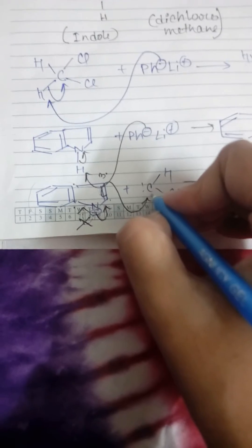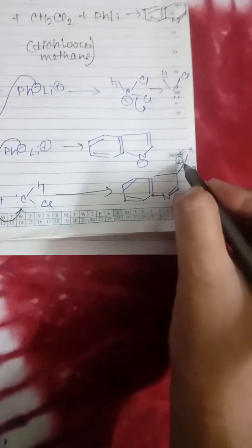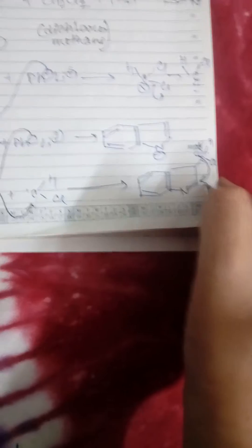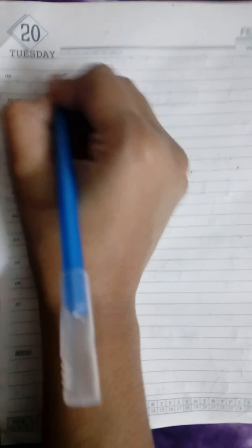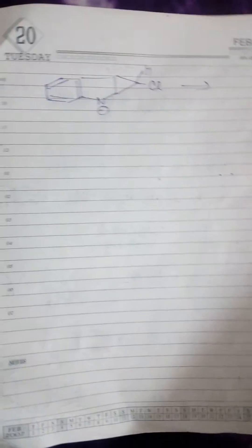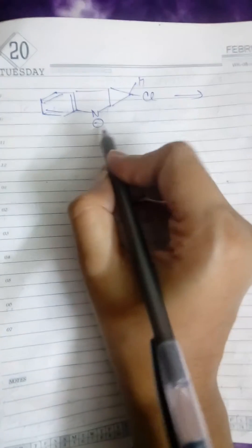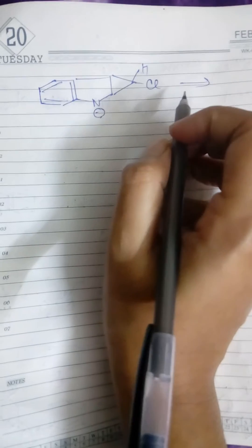As this electron deficient element gains the electron, a negative charge forms on the carbon. This negative charge will attack to this position and again regain the negative charge on nitrogen. In the next step, this is a ring closure mechanism.